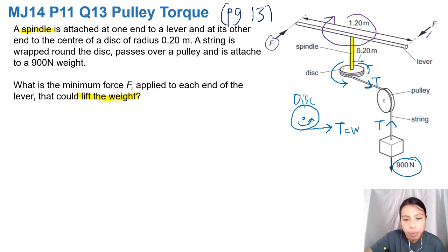If you want to find what that is, we have to look at the disc and the lever on top. So let's do it this way. Clockwise torque or moment should equal the anti-clockwise moment.